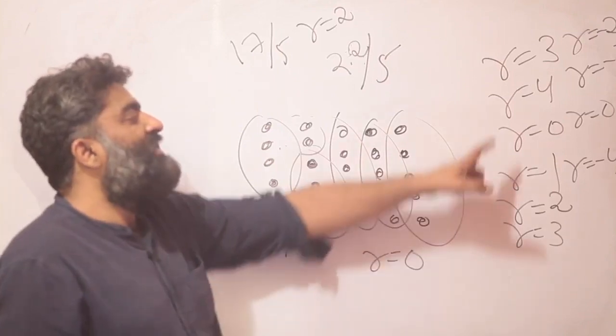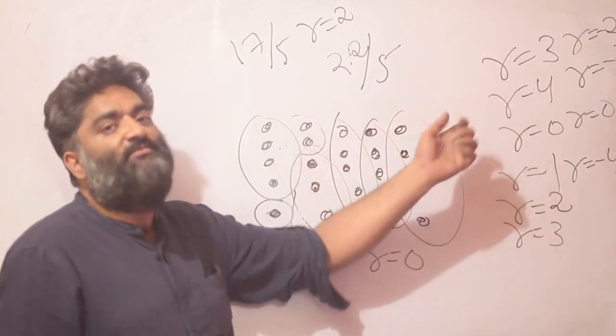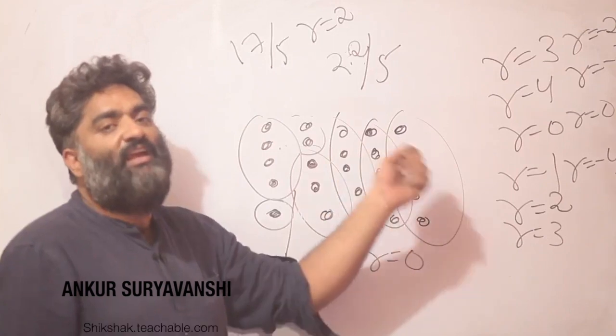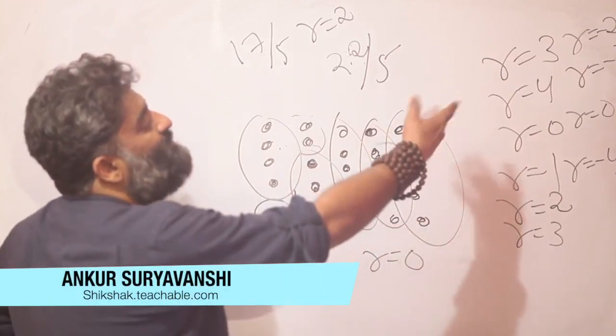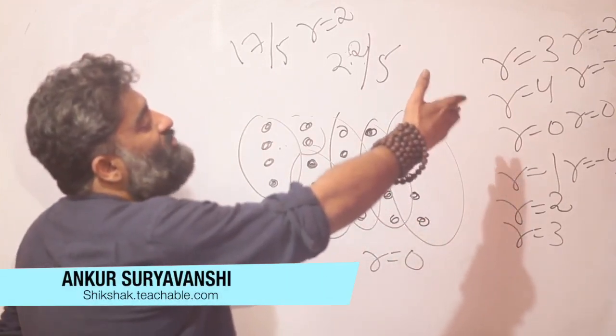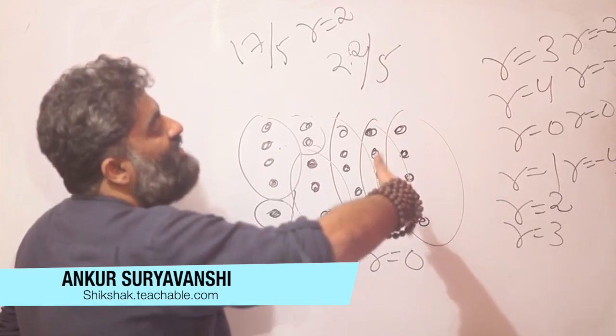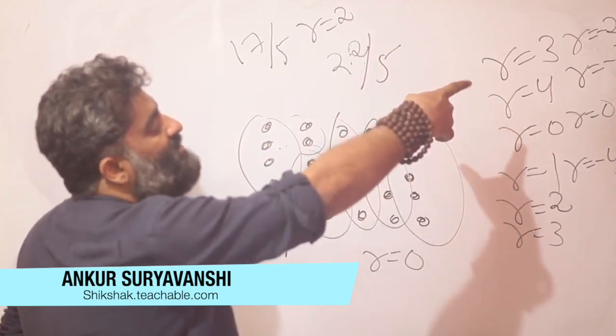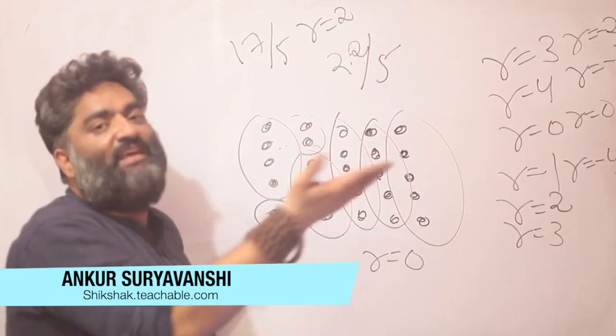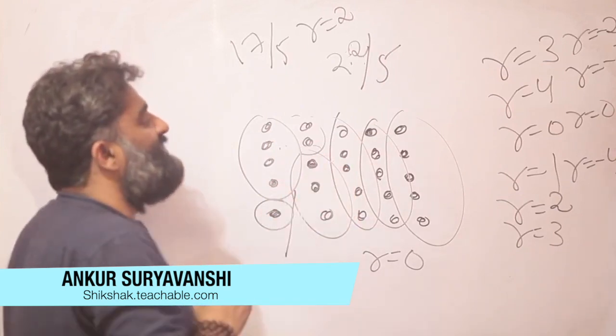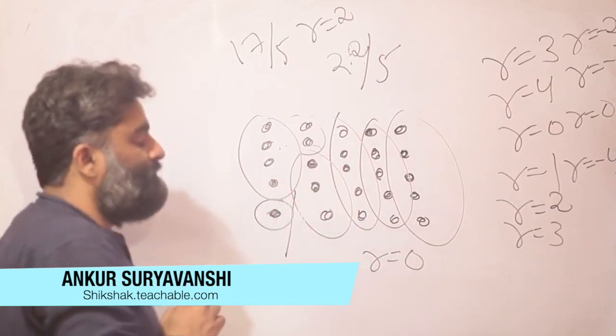So a couple of ideas. One, that remainder is pretty limited in terms of and it repeats over and over again. And secondly, the idea of positive remainders means you are how much ahead of a multiple of 5 you are, and a negative remainder means how behind are you of the next multiple, right? So hope these ideas are reasonably clear.